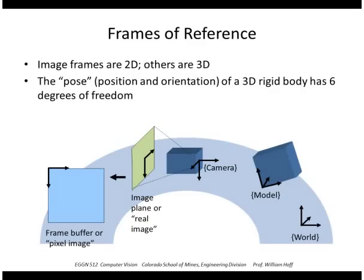To summarize the frames we've been dealing with: starting with the world, which is a three-dimensional coordinate frame XYZ, we talk about the pose of a model in the world — its position and orientation. The camera observes the model and has its own coordinate system, usually attached at the pinhole.